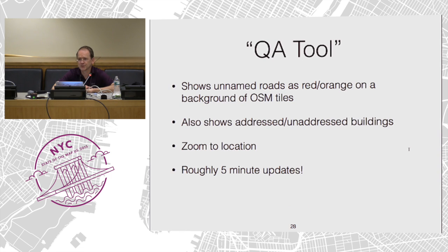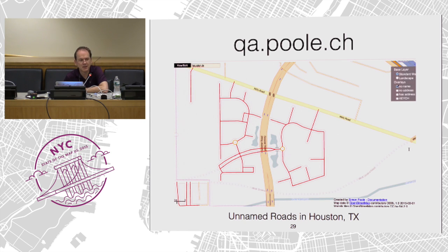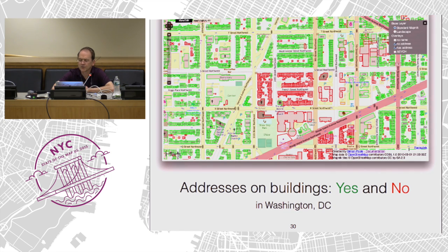My favorite named QA tool is 'QA Tool,' run by a gentleman in Switzerland. It shows unnamed roads as red and orange on a background of OpenStreetMap tiles. It also can show addressed and unaddressed buildings. It has a zoom to location and a five-minute refresh — amazingly quick. It doesn't do a lot of things, but it does everything it does extremely well. Here's some unnamed roads in Houston in a new subdivision. And here's Washington DC — all the green buildings have addresses, all the red buildings do not. There was a huge import and we got the buildings, but we're still working on the addresses.